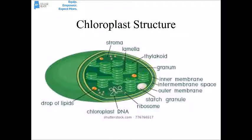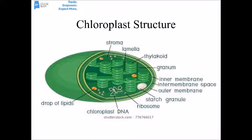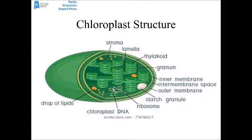Here's a picture of a chloroplast. These tiny little sacs are called thylakoids; a stack of sacs is a granum; and the fluid-filled space within the chloroplast is the stroma. Note that this chloroplast has its own piece of DNA and its own ribosomes — these ribosomes are very similar to bacterial ribosomes.